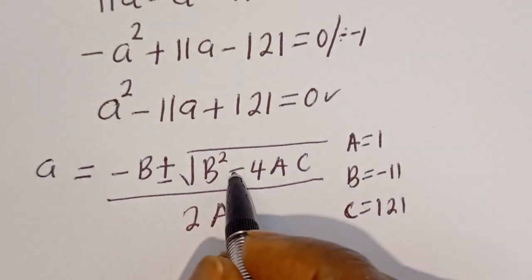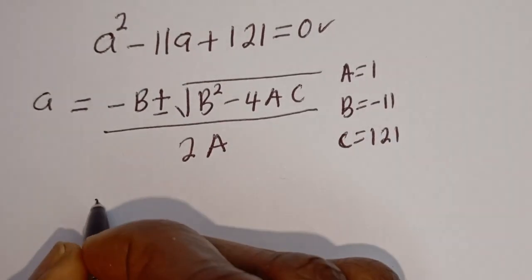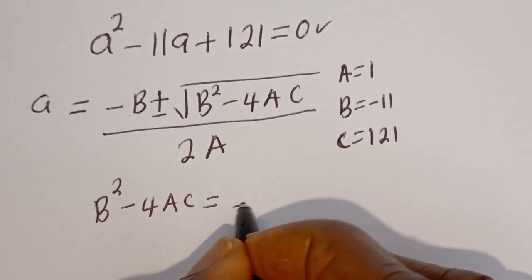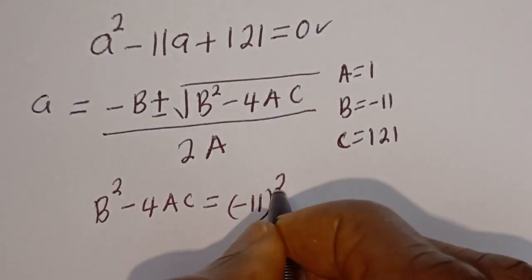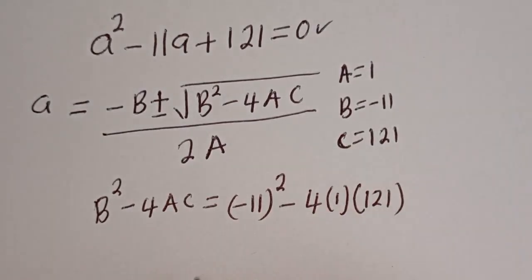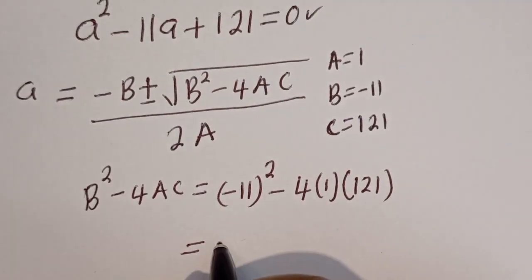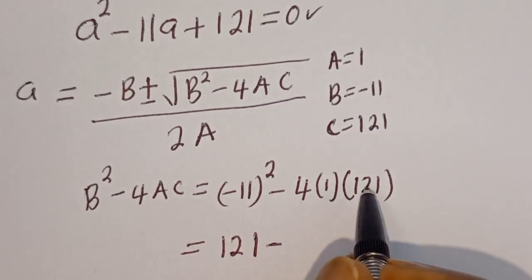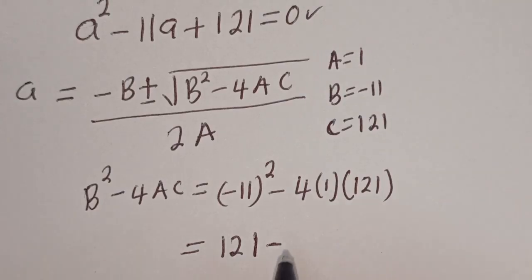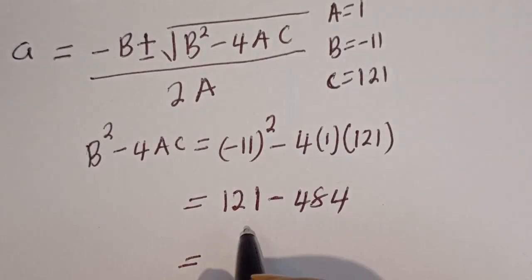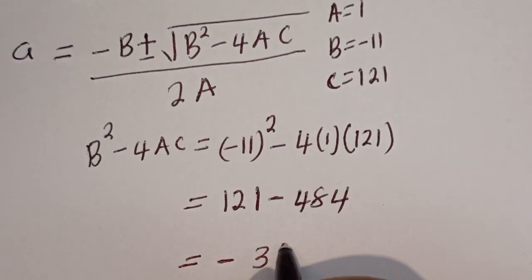Now let's consider b squared minus 4ac, which is the discriminant. b squared minus 4ac equals minus 11 squared minus 4 multiplied by 1, multiplied by 121. Minus 11 squared is 121, and 4 times 1 times 121 is 484. Subtracting 121 from 484 gives minus 363.